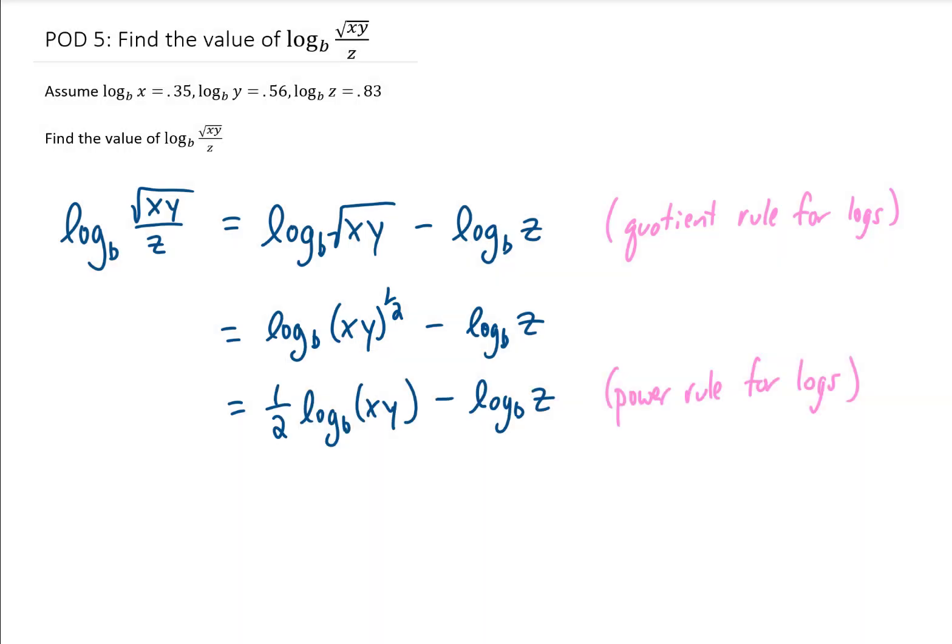Finally to complete this problem we need to recall a product rule for logarithms which says that if we have a product of two things inside of a logarithm, which we do right here, that we can split that up into two pieces by adding those two terms.